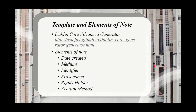For this project, the template comes from the Dublin Core advanced generator. Some elements of note from Dublin Core that apply specifically to image cataloging would be: date created; medium — what is the painting or statue or object made of; identifier — this refers to the cataloging number, for example accession numbers and temporary numbers; provenance — where did the object come from and what is its history of ownership; rights holder — are there any copyright issues with the object; and accrual method — how was it obtained. These are all very important elements for museums and art collections.